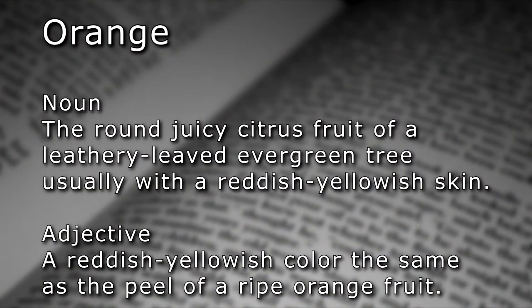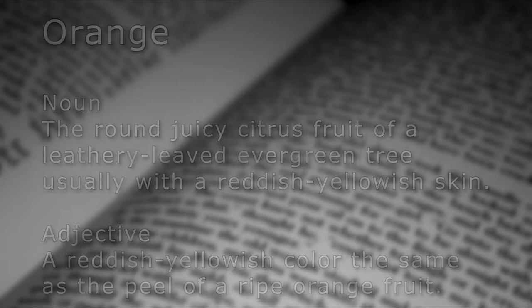Orange. Noun: the round, juicy citrus fruit of a leathery-leaved evergreen tree, usually with a reddish-yellowish skin. Adjective: a reddish-yellowish color, the same as the peel of a ripe orange fruit.